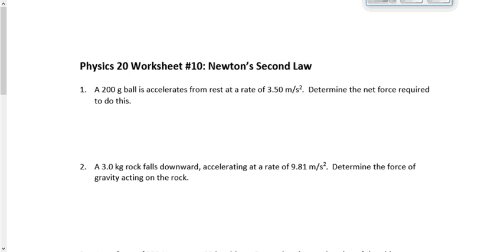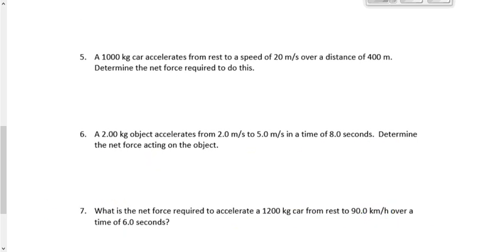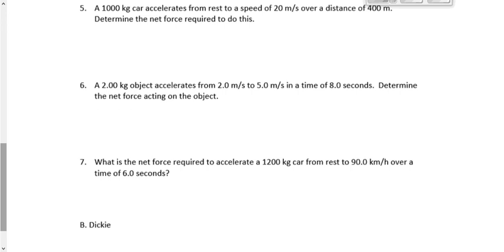Let's have a quick look at questions six and seven now, which is what we have for homework on worksheet number 10. Both of these questions involve Newton's second law. Number six says a two-kilogram object accelerates from two meters per second to five meters per second in a time of eight seconds. What's the net force acting on the object? We're going to say the mass is 2.00 kilograms. What else have we got? VI is 2.0 meters per second. VF is 5.0 meters per second. My time interval is 8.0 seconds.